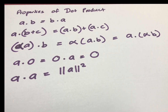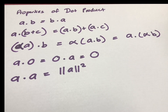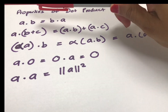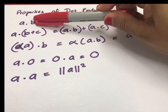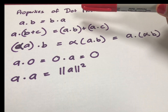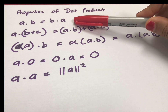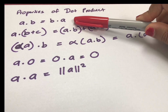Let's learn about the properties of the dot product. The dot product of vectors a and b is equal to the dot product of vectors b and a. This is called the commutative property.